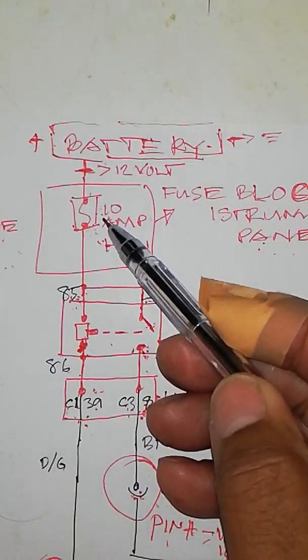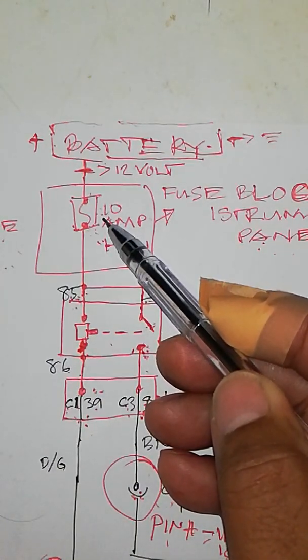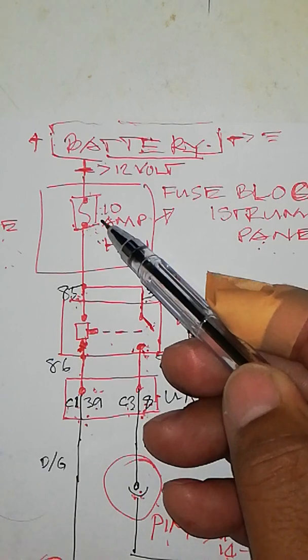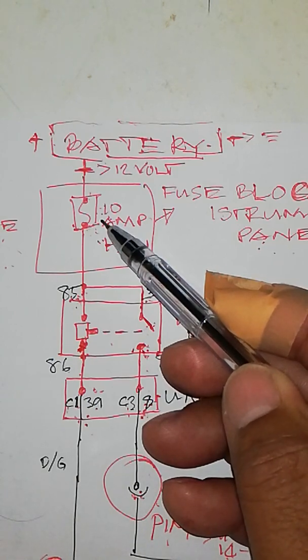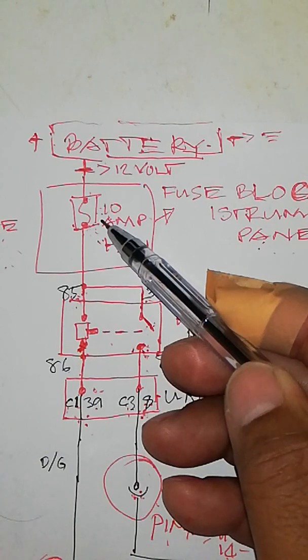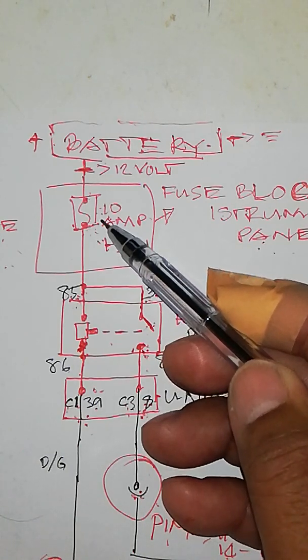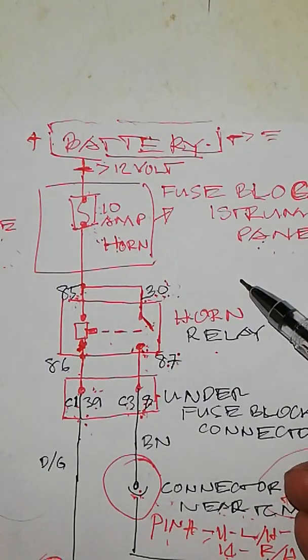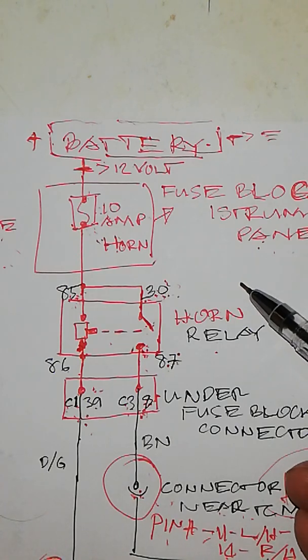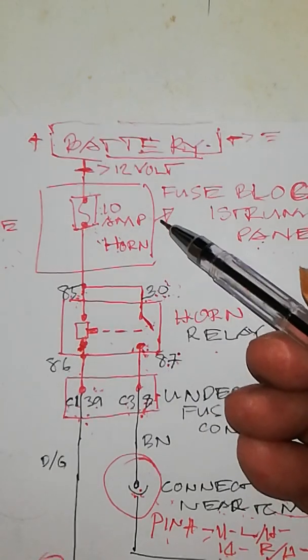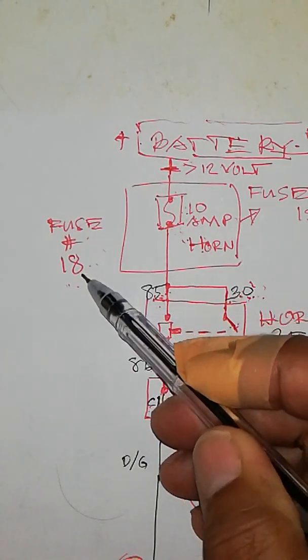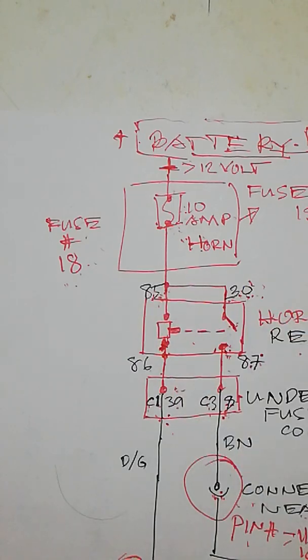This is the 10 ampere fuse of your horn. Where can you find this 10 ampere fuse? Open the driver door, and you can find the fuse on the instrument panel side, left side, near the steering wheel. If you remove the fuse cover, you can find number 18 fuse, 10 amperes for the horn.